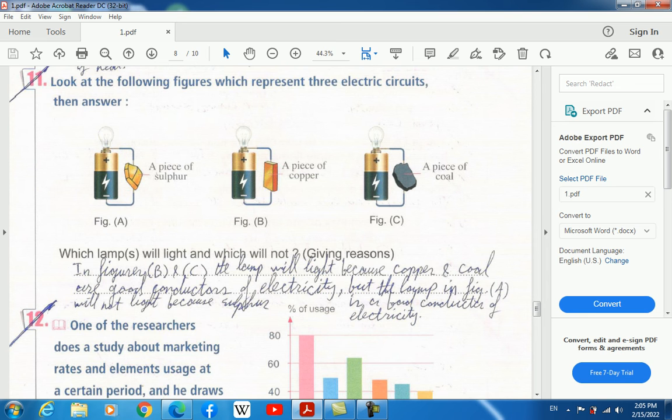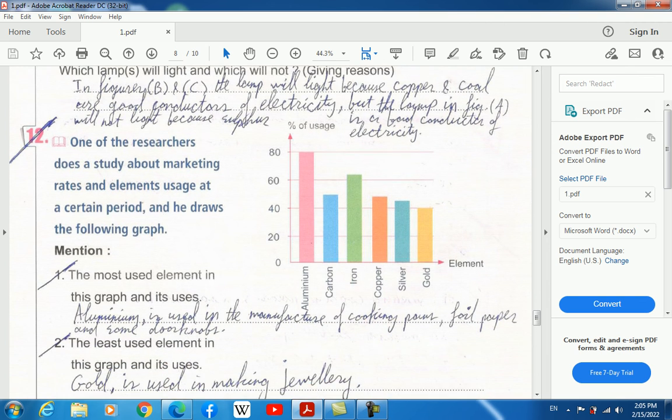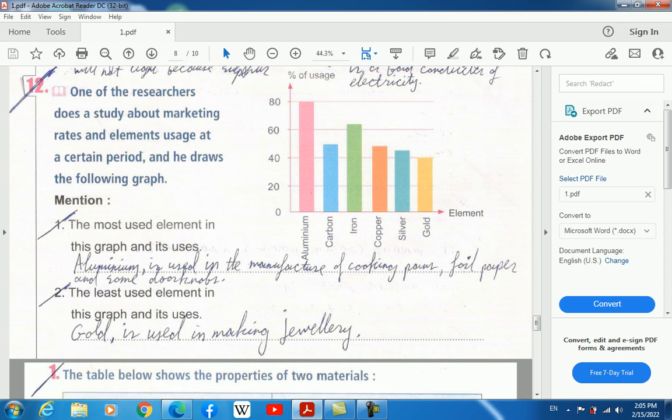Look at the following figures, which represent three electric circuits. Figure A contains a piece of sulfur. Figure B, a piece of copper. Figure C, a piece of coal. Which lamp or lamps will light, and which will not? Of course, in figure B and C, the lamp will light because copper and coal are good conductors of electricity. But the lamp in figure A will not light because sulfur is a bad conductor of electricity.